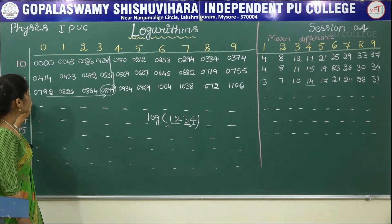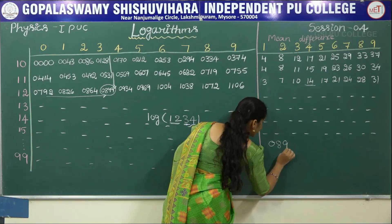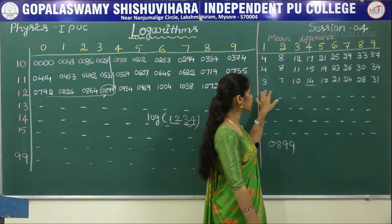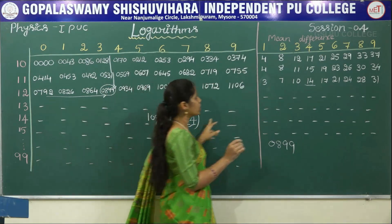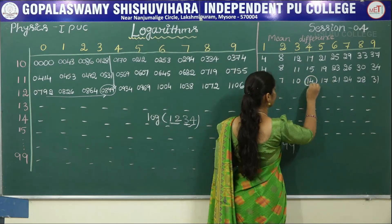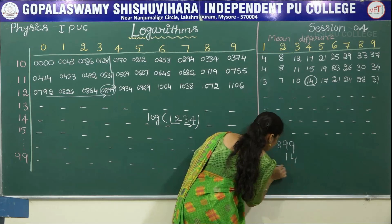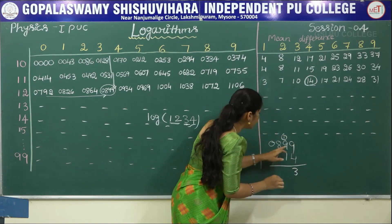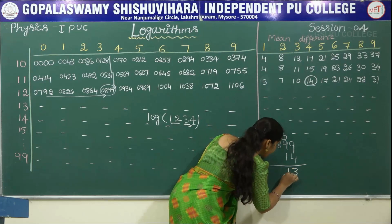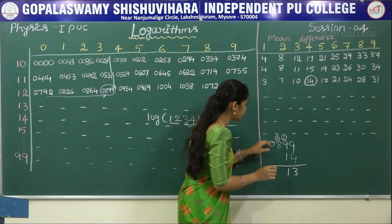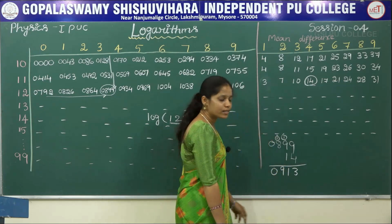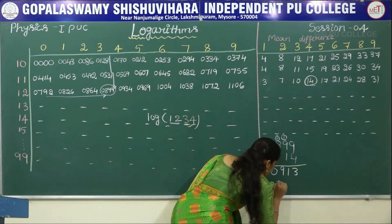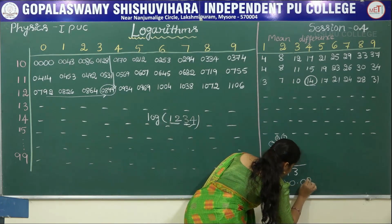The value of 12 under column 3 is 0899, and the mean difference under column 4 is 14. We add these two values: 9 plus 4 is 13, carry 1; 9 plus 1 is 10, plus 1 is 11, carry 1; 8 plus 1 is 9. The result is 0913. Since mantissa is the decimal part, it is written as 0.0913.